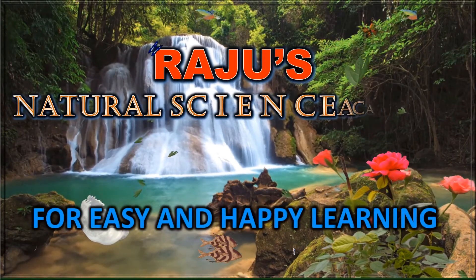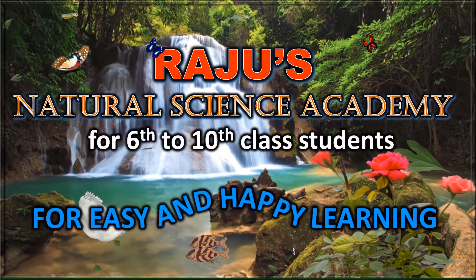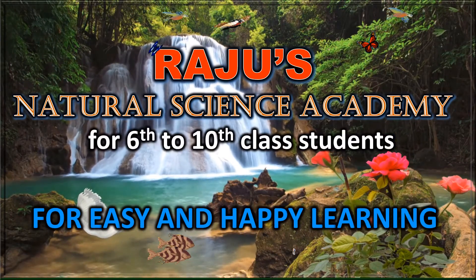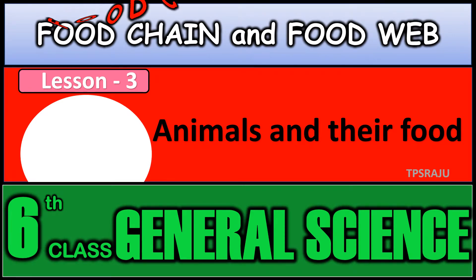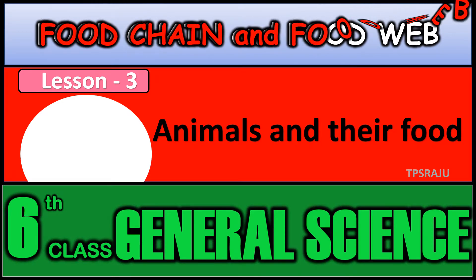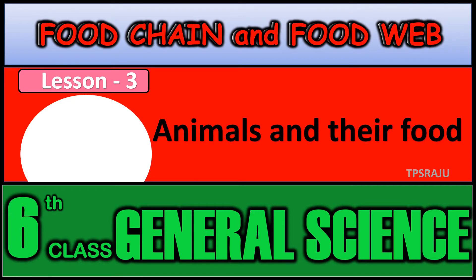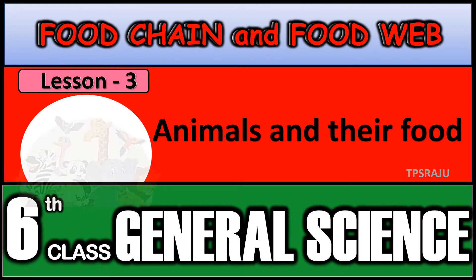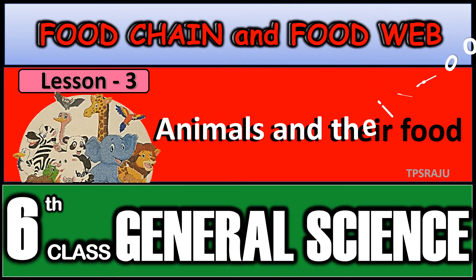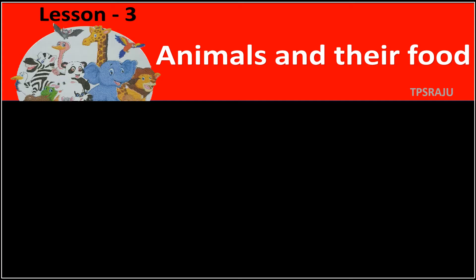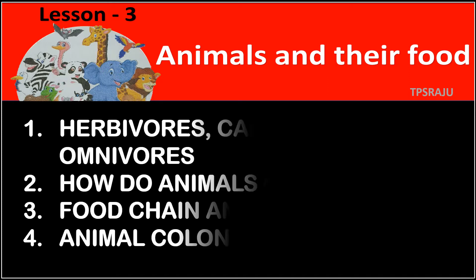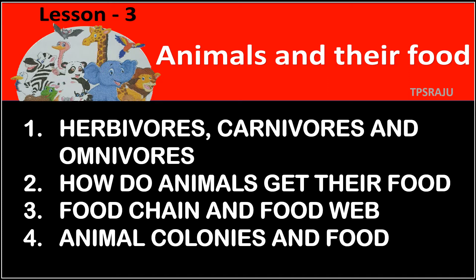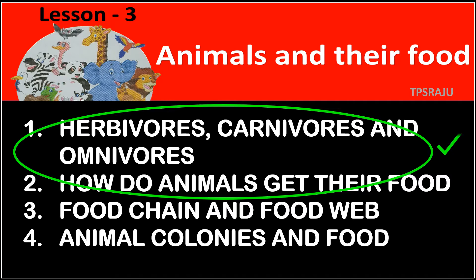Hi, welcome to Raju's Natural Science Academy for easy and happy learning. Good morning students, today's topic is food chain and food web from the third lesson of sixth general science, animals and their food. Already we know that there are four topics in this lesson. We completed the first two topics in the previous videos. Now we are going to learn about the third topic, that is food chain and food web.